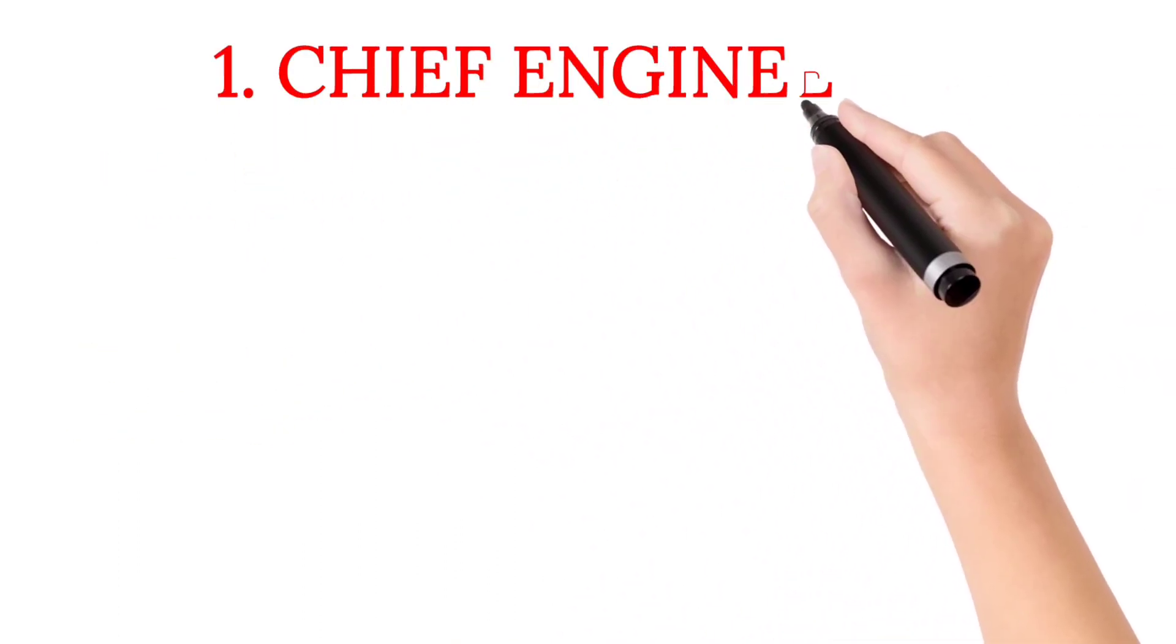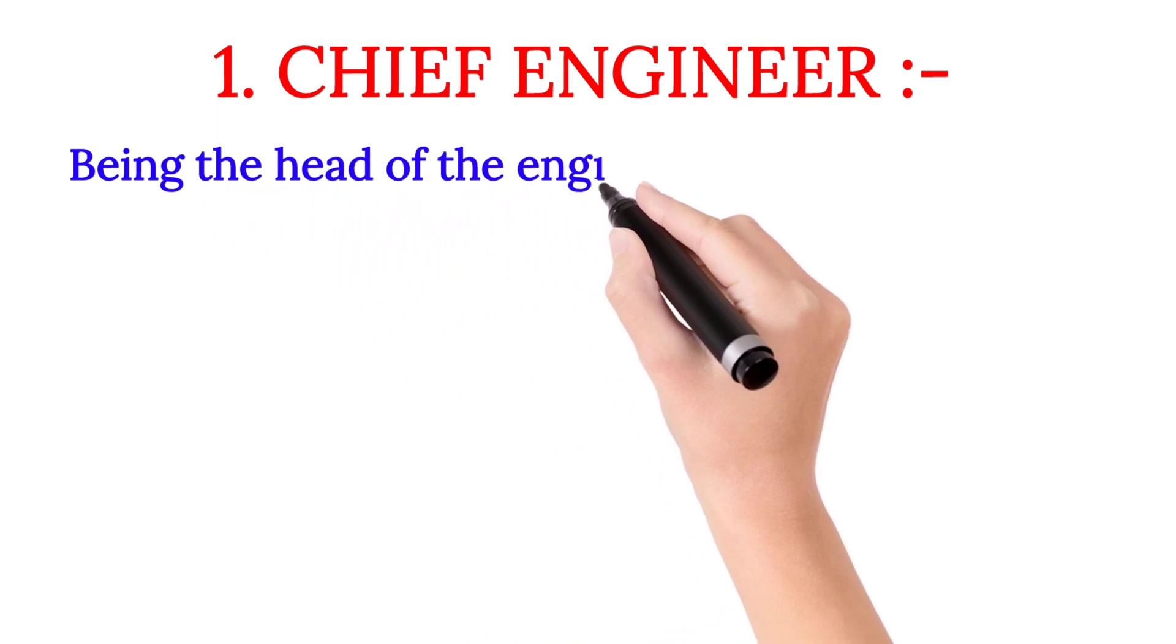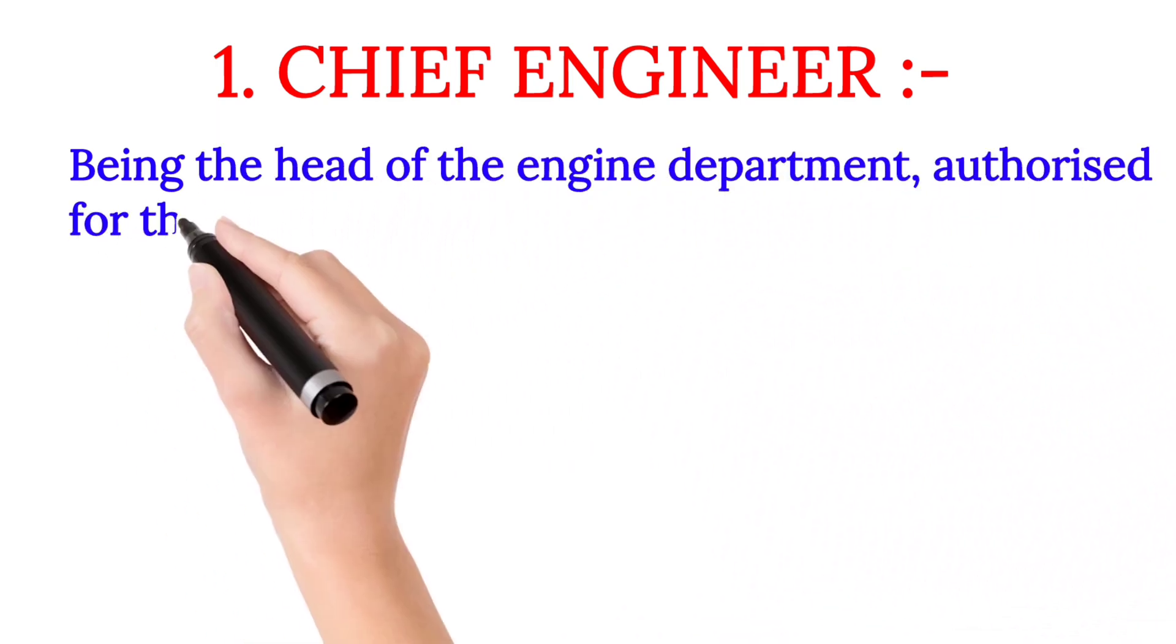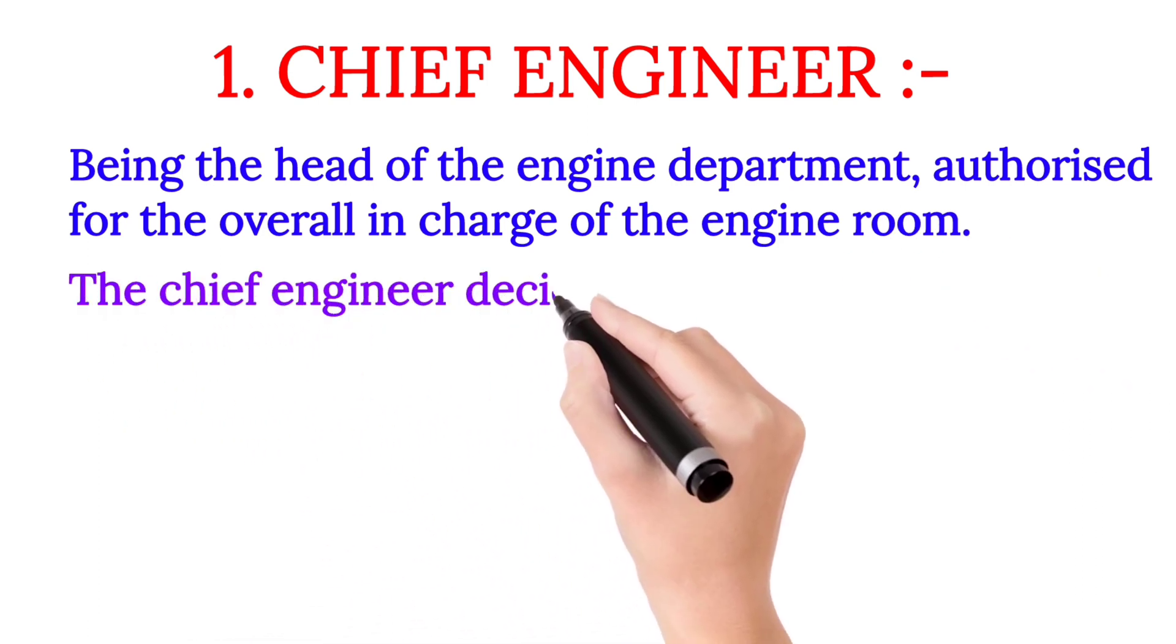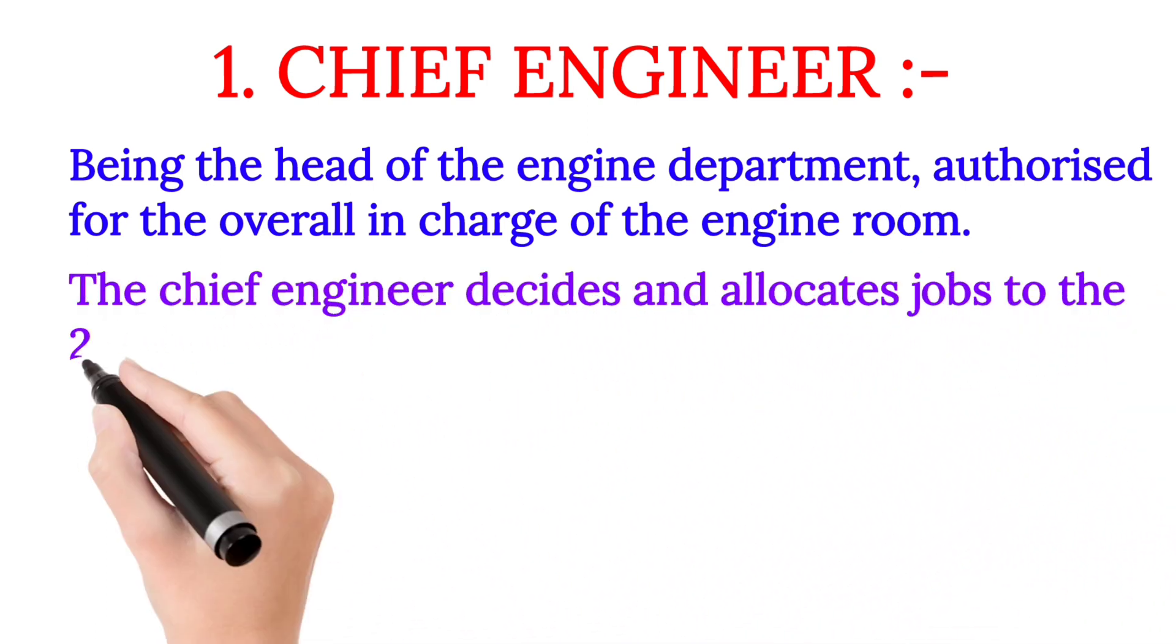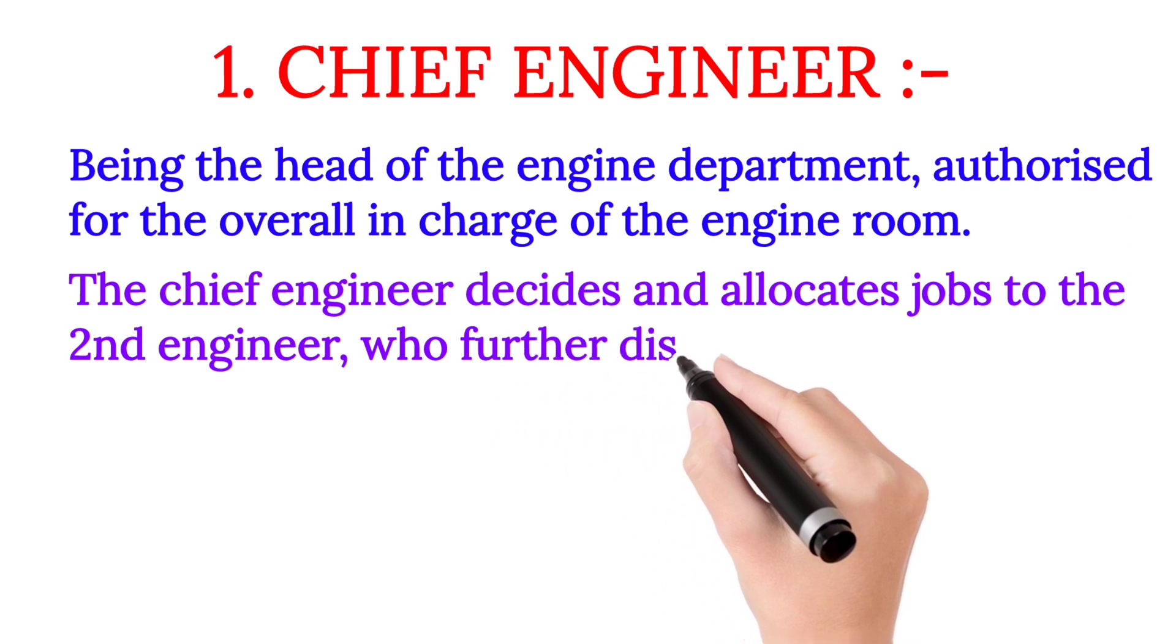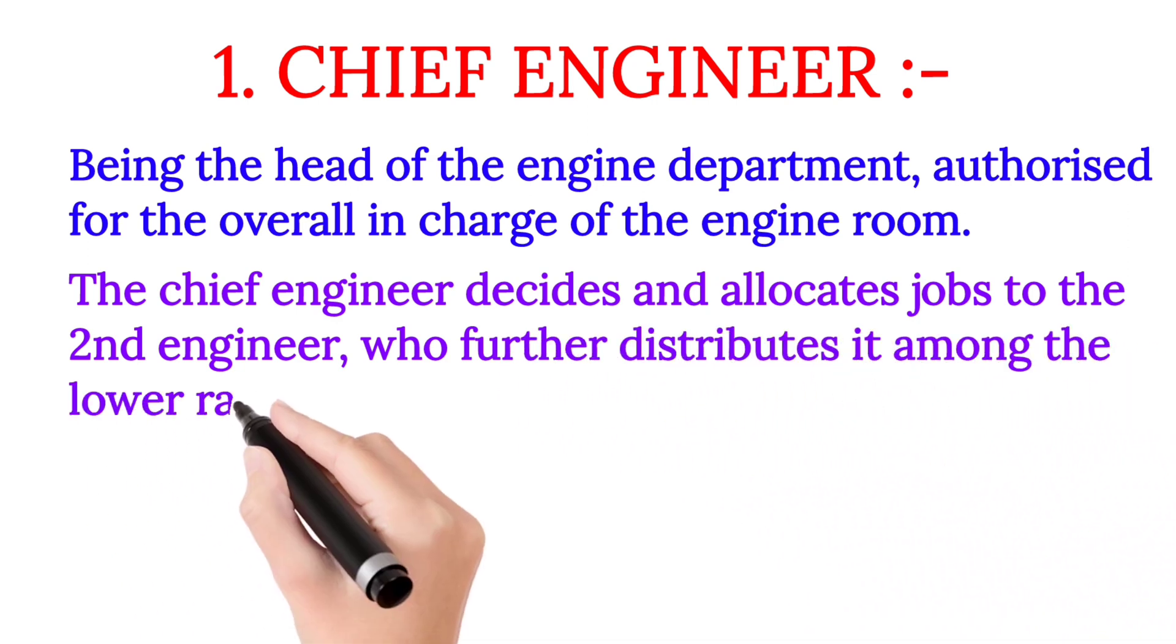Number one: Chief Engineer. Being the head of the engine department, the Chief Engineer is authorized for the overall in charge of the engine room. The Chief Engineer decides and allocates jobs to the Second Engineer, who further distributes it among the lower ranks.